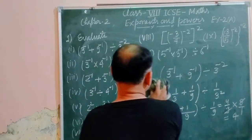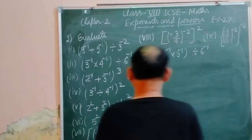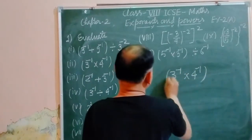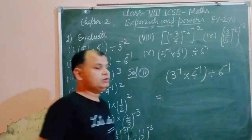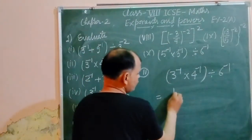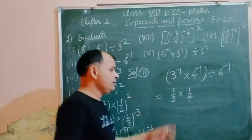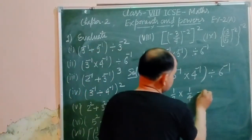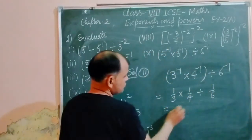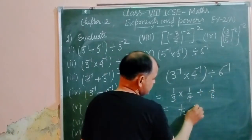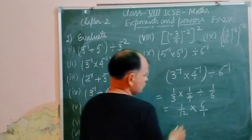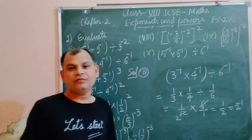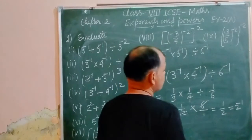Now the second question: (3 to the power minus 1 times 4 to the power minus 1) divided by 6 to the power minus 1. We invert each base: 1/3 times 1/4 divided by 1/6. This gives 1/12 divided by 1/6. Division changes to multiplication and we invert, so 1/12 times 6 = 6/12 = 1/2. The answer is 1/2, which can also be written as 2 to the power minus 1.